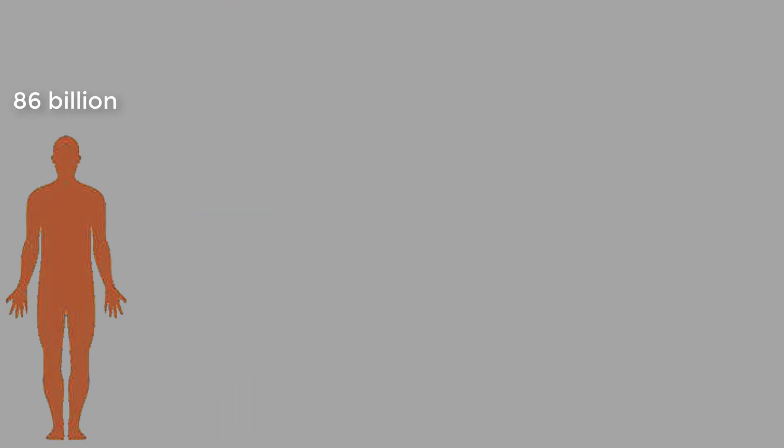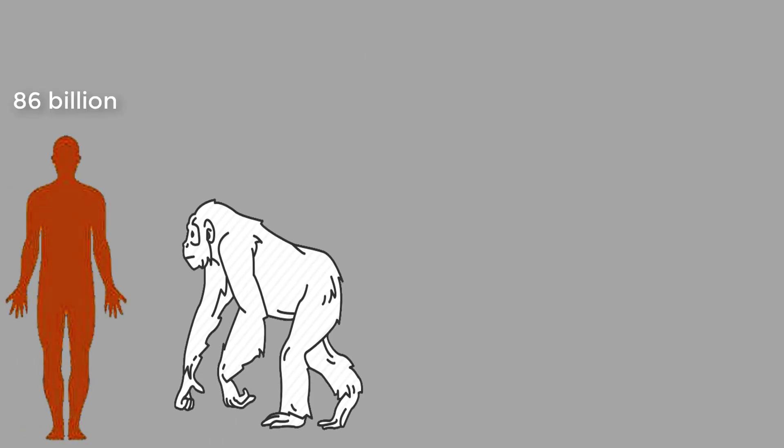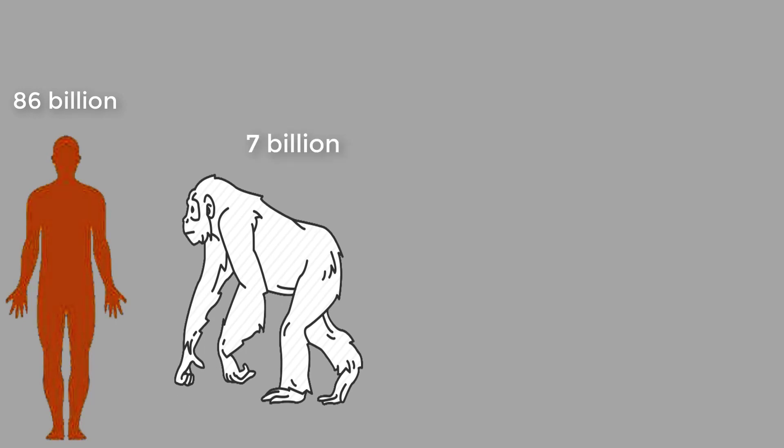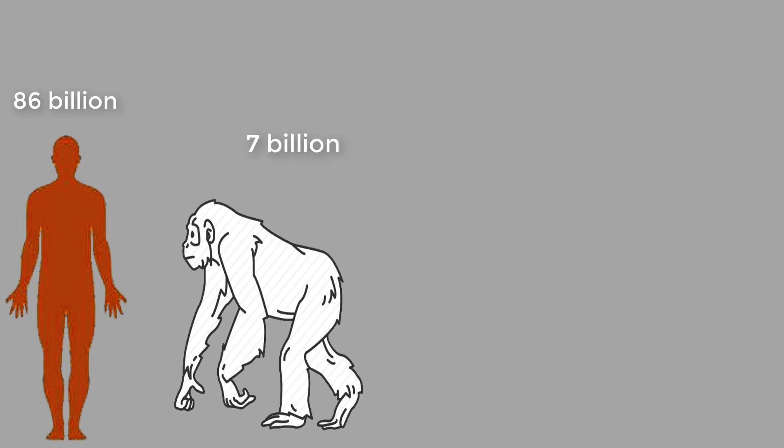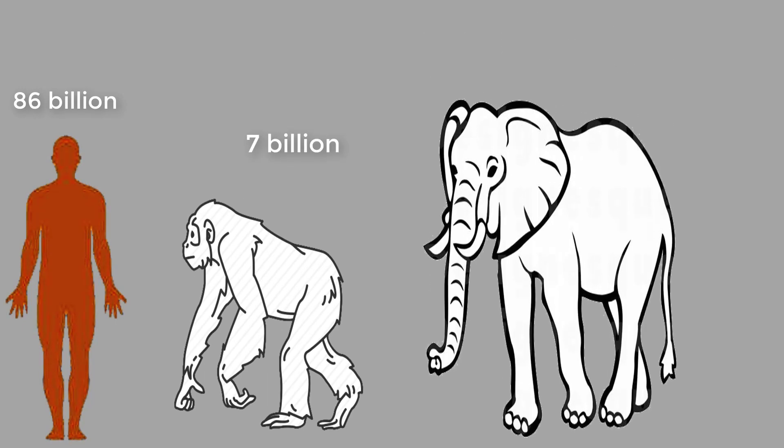A little bit on some animals. Chimpanzees, which are the closest relative to us humans, consist of just 7 billion neurons. Whereas an elephant, which is the largest land animal, has a number of 23 billion.